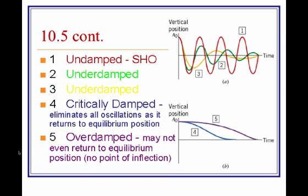On this graph here, in the red, we have undamped harmonic motion. Notice the amplitude remains the same after each oscillation back and forth.